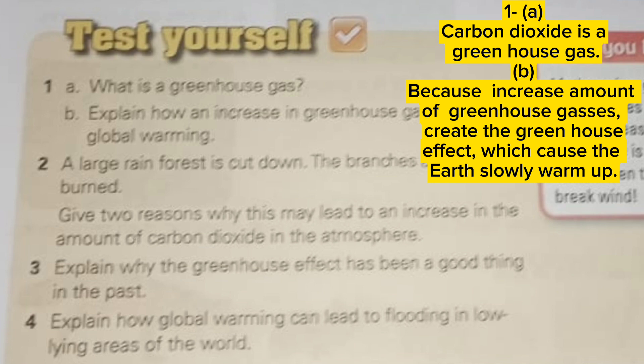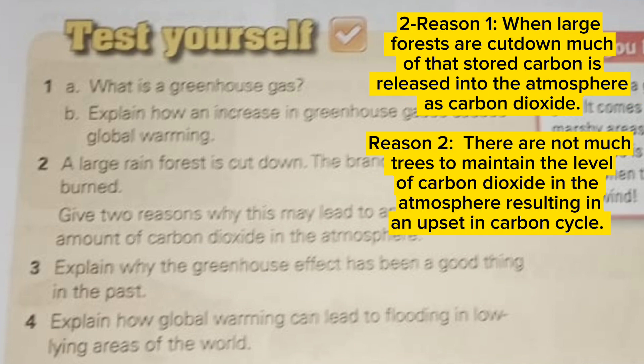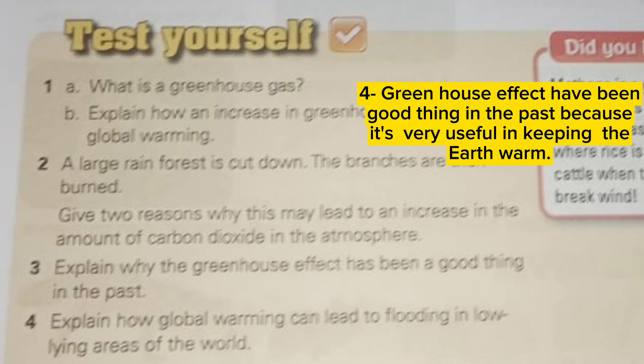The greenhouse effect causes the Earth to slowly warm up. Reason one: when large forests are cut down, much of the stored carbon is released into the atmosphere as carbon dioxide. Reason two: there are not enough trees to maintain the level of carbon dioxide in the atmosphere, resulting in an upset in the carbon cycle.